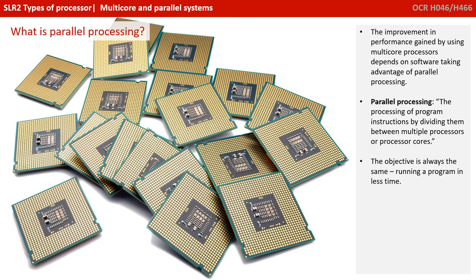So what do we mean by parallel processing? The improvement in performance gained by using multi-core processors is totally dependent on software taking advantage of parallel processing. This is the processing of program instructions by dividing them between multiple processors or processor cores, with the objective of running a program in less time.